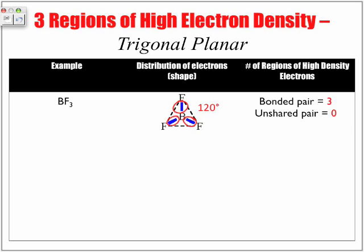Another thing to make note of for these trigonal planar is that the angle found here between each fluoride is 120 degrees. Let's look at another example of a three region of high electron density. Let's talk about the shape. It's trigonal planar.